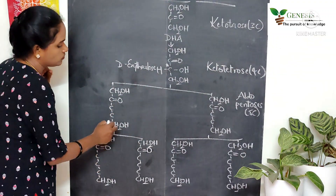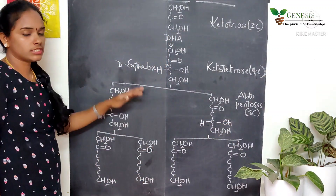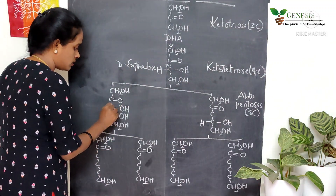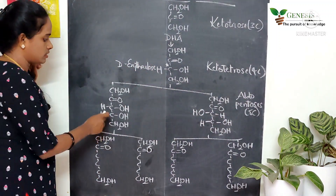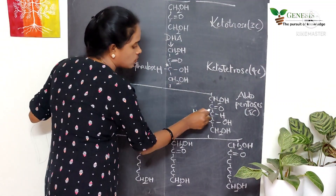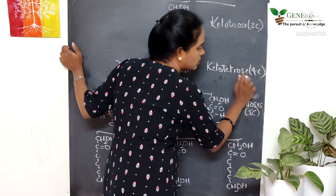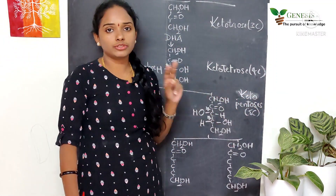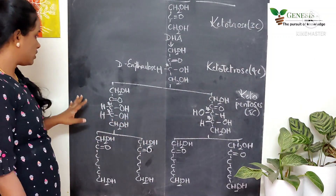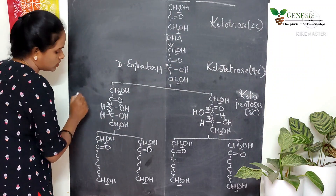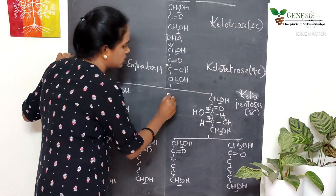For the ketopentoses, the farthest carbon must contain OH on the right side and H on the left side. The first derivative has OH on the right and H on the left, while the second has OH on the left and H on the right. The ketopentoses contain two chiral centers, while aldopentoses contain three chiral centers. Their names are D-ribulose and D-xylulose.